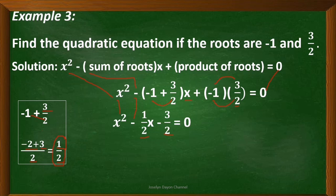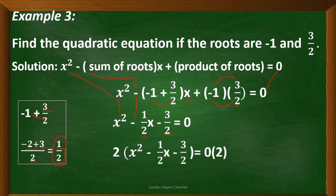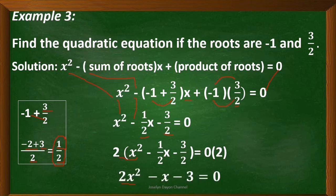Next, multiply both sides of the equation by 2, since our linear term and constant term have a denominator of 2. Apply the distributive property: 2 times x squared is 2x squared; 2 times negative 1 half x is negative x; 2 times negative 3 halves is negative 3; and 0 times 2 is 0. So the quadratic equation is 2x squared minus x minus 3 equals 0.